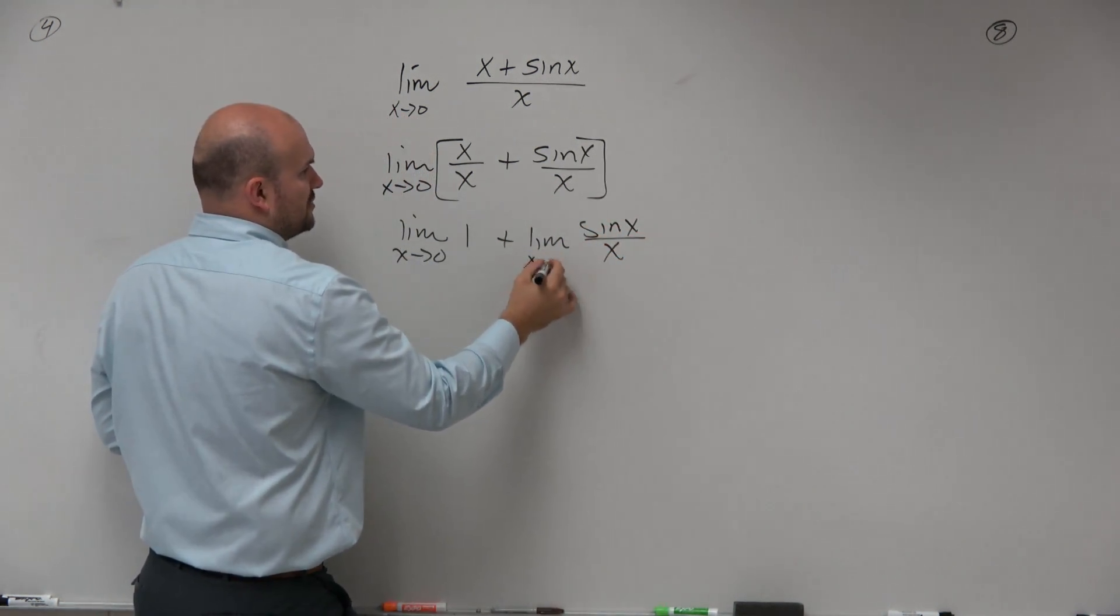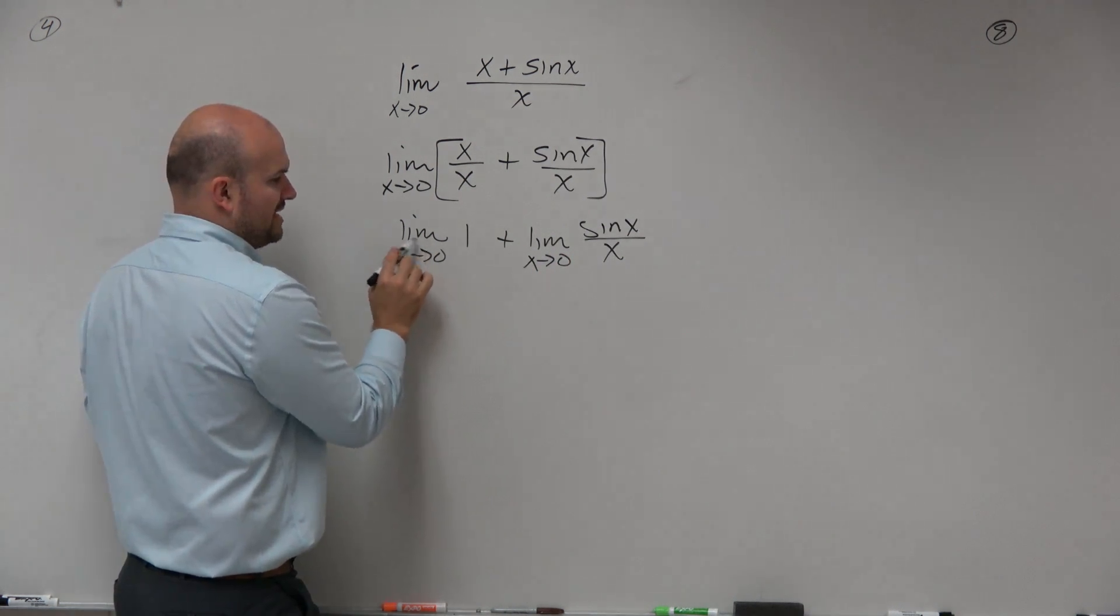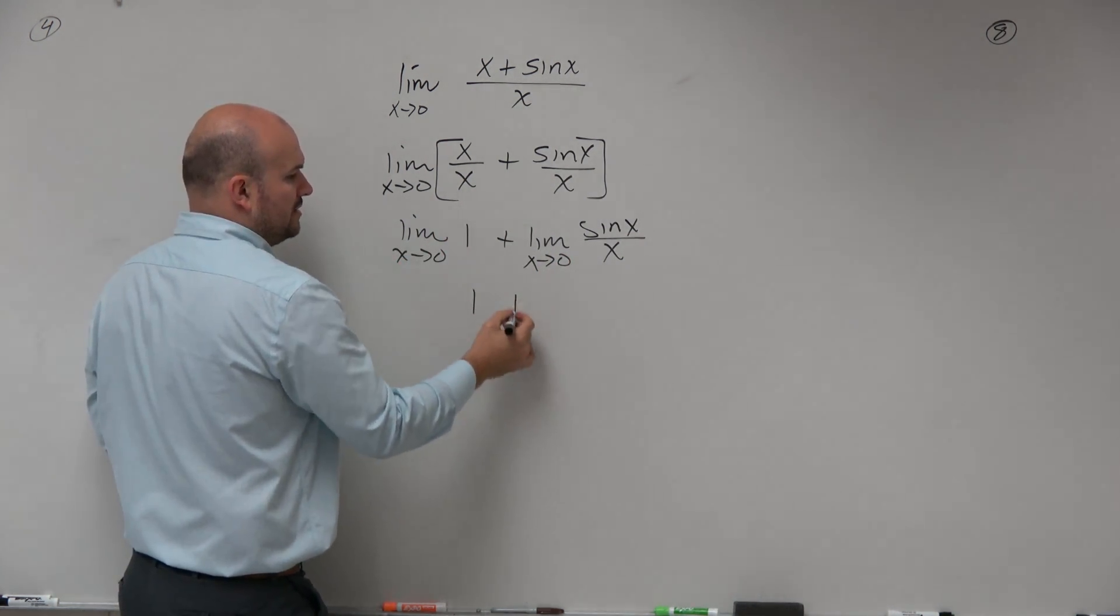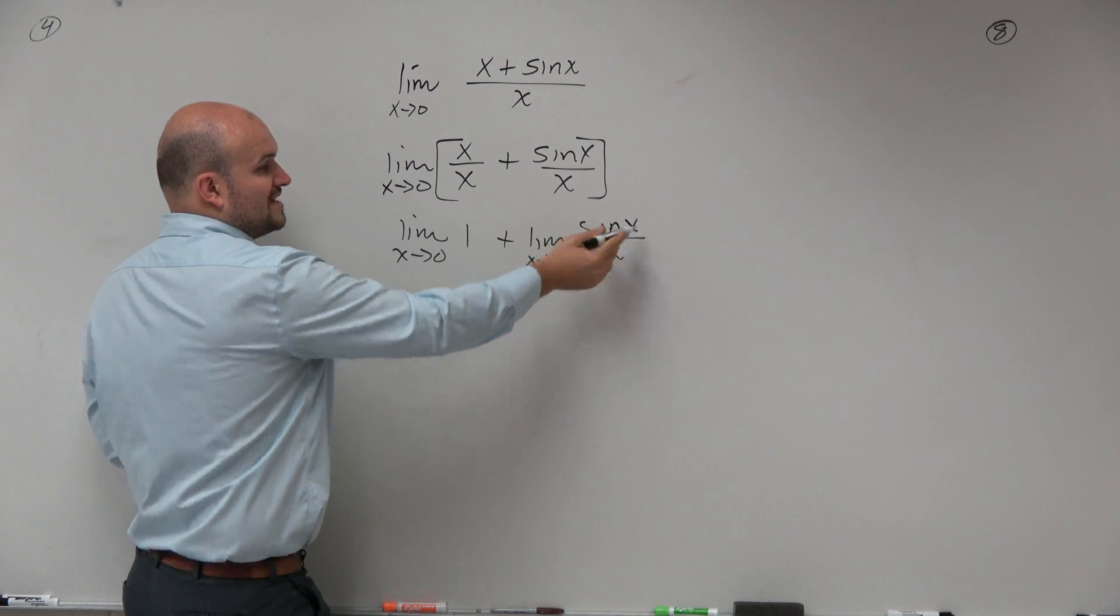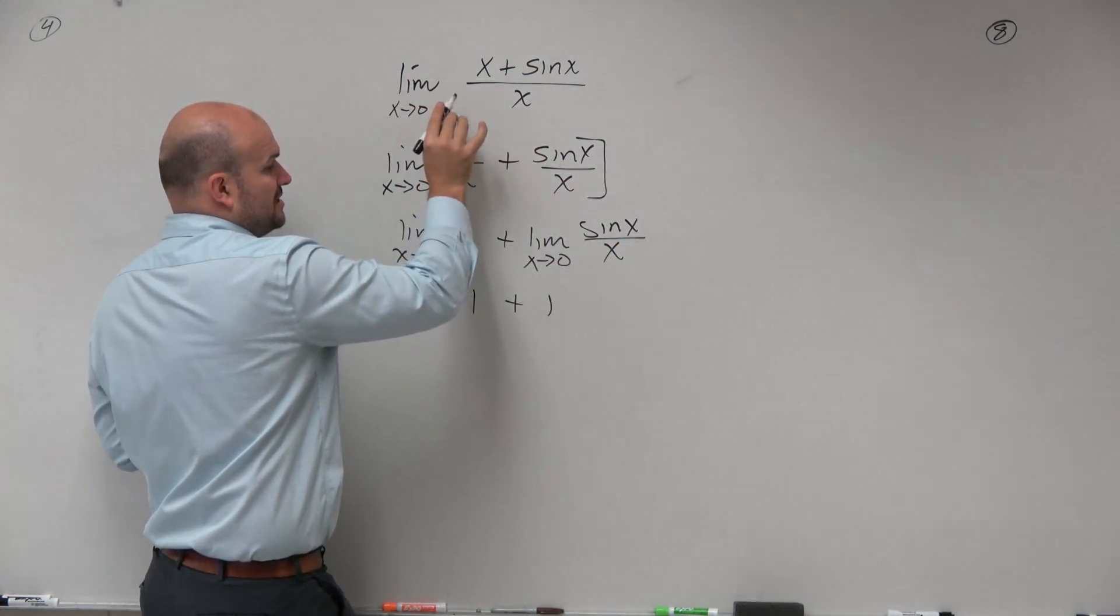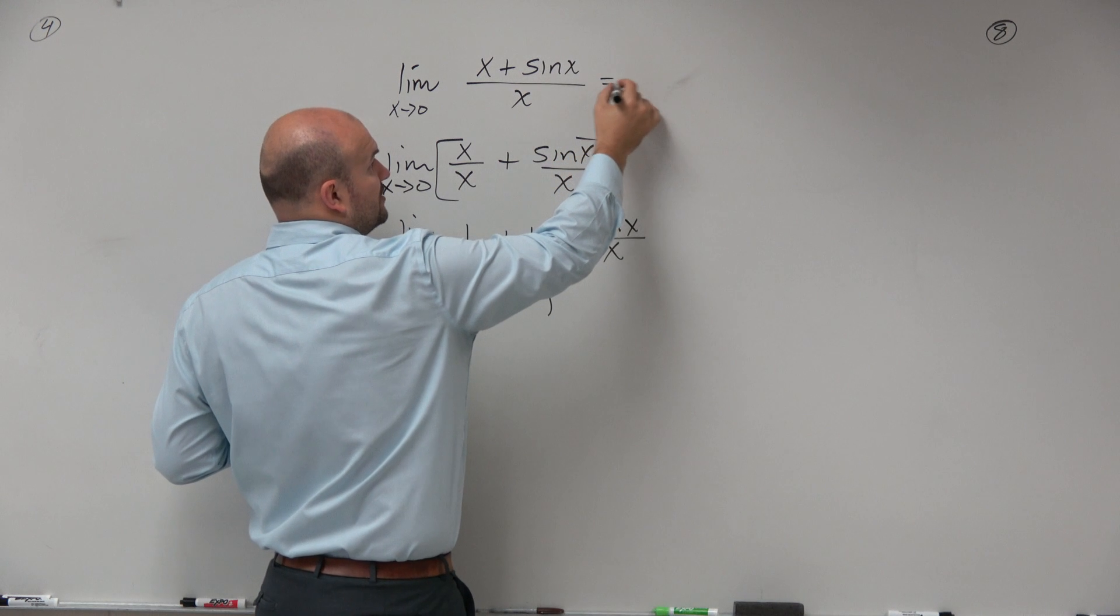Well, as x approaches 0. So obviously, guys, we know that the limit as x approaches 0 of 1 is just going to be 1, plus the limit as x approaches 0 of sine of x over x is 1. So the limit as x approaches 0 of x plus sine x over x is going to equal 2.